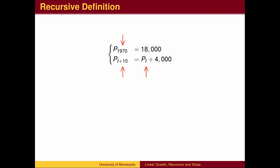The subscript tells us where we are in the sequence. In this example, we are measuring the population at various times, so the subscript is representing the year. P sub 1970 is the population in 1970.